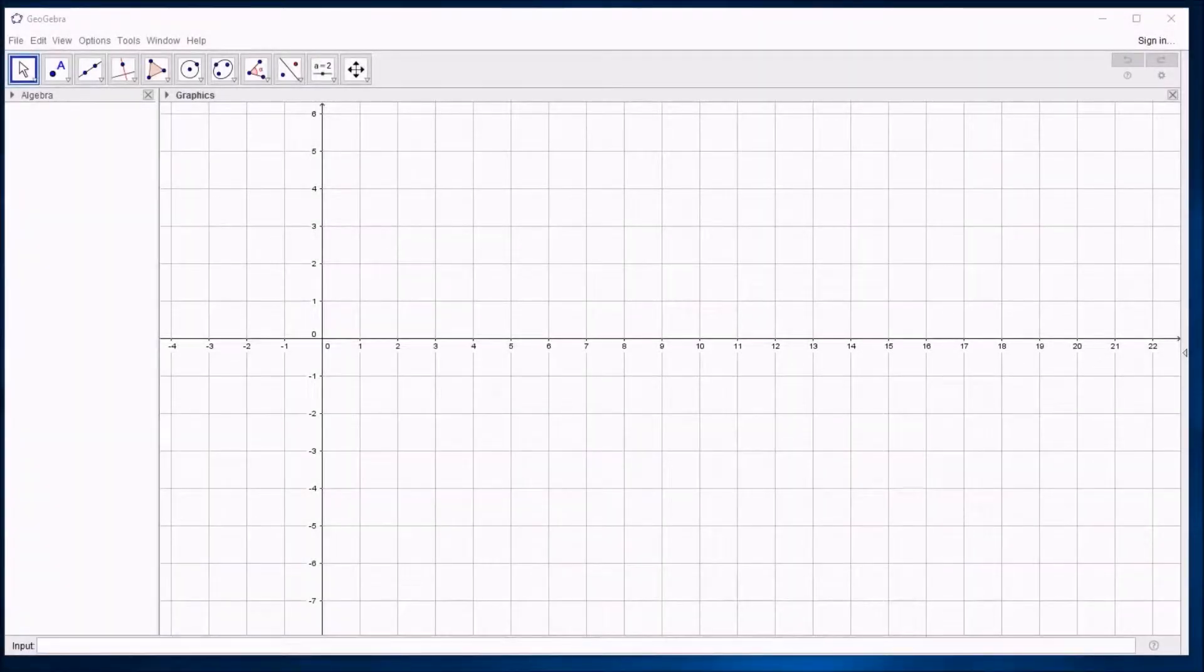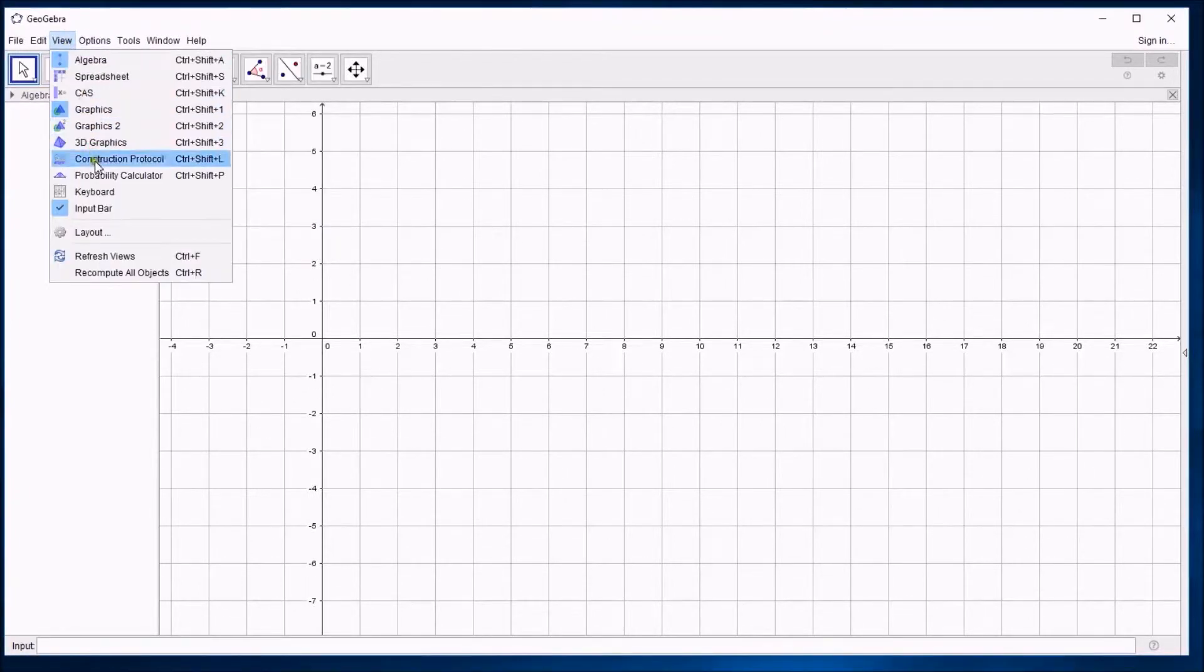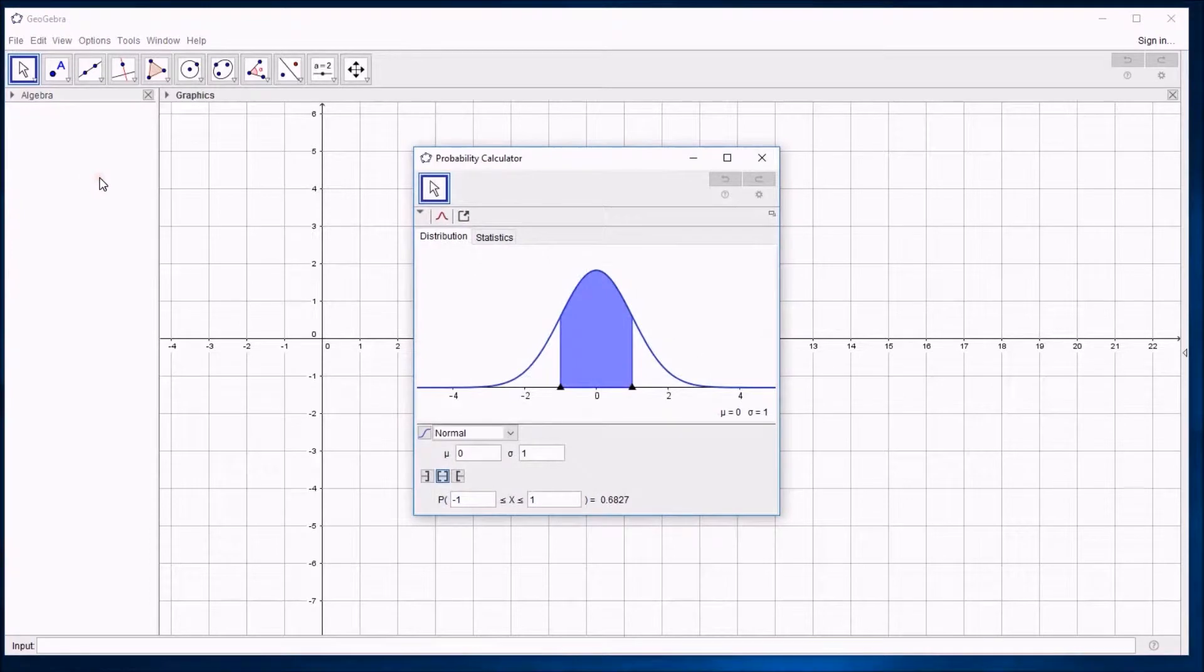In this video I'm going to show you how to use the probability calculator mode in GeoGebra. This is a very useful way to avoid having to use those probability tables that you might have seen in older versions of A-level maths. To get into this mode, if you click on View and drop down to Probability Calculator, it opens up a probability calculator window.